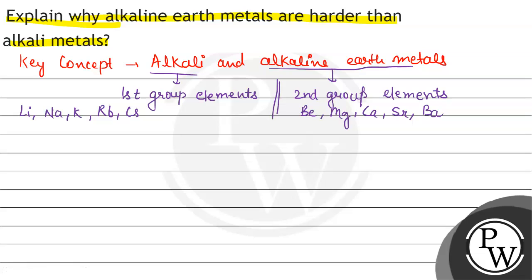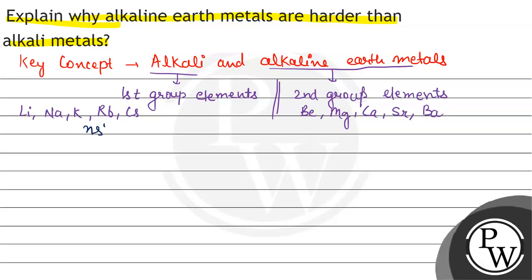Now, the point is they have asked why alkaline earth metals are harder than alkaline metals. Let us look at the electronic configuration. The general electronic configuration for the first group element is NS1, whereas the general electronic configuration for the alkaline earth metal is NS2. By this we can see there is a presence of two electrons in the outermost shell of alkaline earth metals, as compared to the alkaline metals.